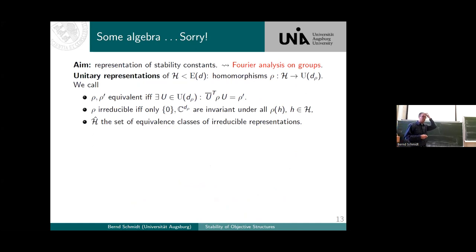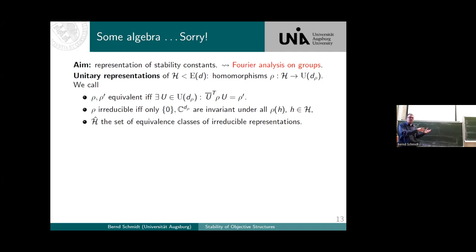Now we have to do some checking, and what I'd like to give you is a check on these quantities which is really implementable for a concrete given system. What we want to do now is describe, exactly as for lattices, the stability constants in terms of Fourier analysis. Previously, we had this minimum eigenvalue over a fundamental domain from 0 to 2π of a certain matrix H. Now we have to do it a bit more complicated.